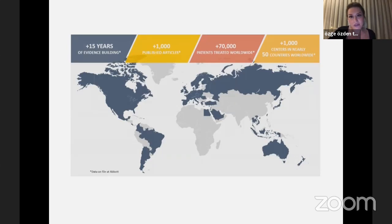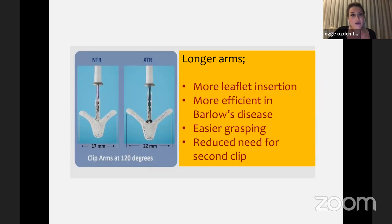We are really familiar with the procedure and we know its benefits very well. There are two types of clips: NTR and XTR. The difference is the clip arm length at 120 degrees — NTR is about 70 millimeters whereas XTR is 22 millimeters. The benefits of longer arms include more leaflet insertion, more efficacy in Barlow's disease, easier grasping, and reduced need for a second clip. However, there is a higher risk of mitral leaflet tear.